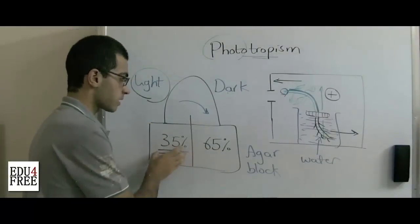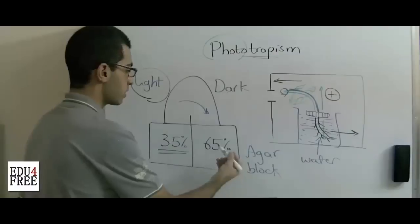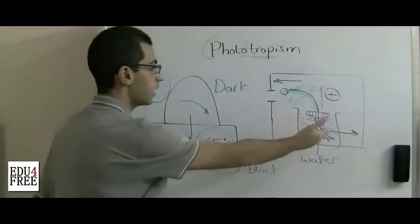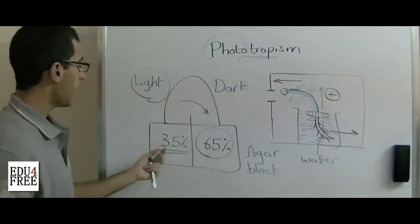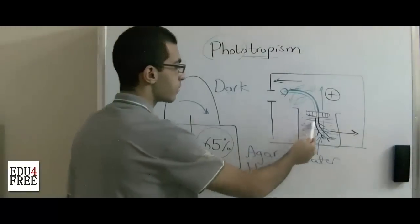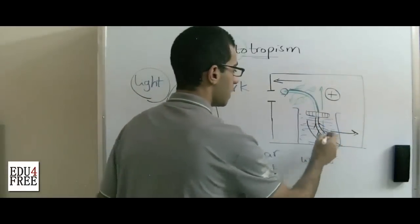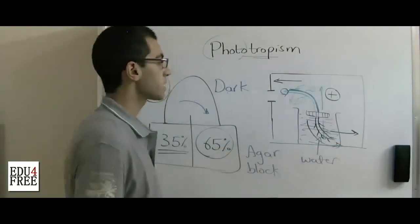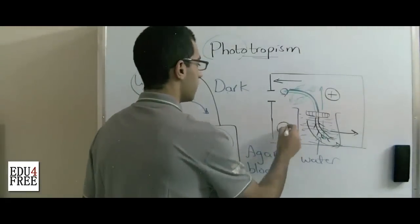The same distribution of auxins is found in the roots, but the effect is the opposite. When there is a high percentage of auxins at one side of the root, the 65% of auxins in the dark side inhibit the growth of cells on this side and they induce the growth of cells to grow more rapidly on the bright side, so that the curvature takes this shape. And from this we conclude that the root is negative phototropic.